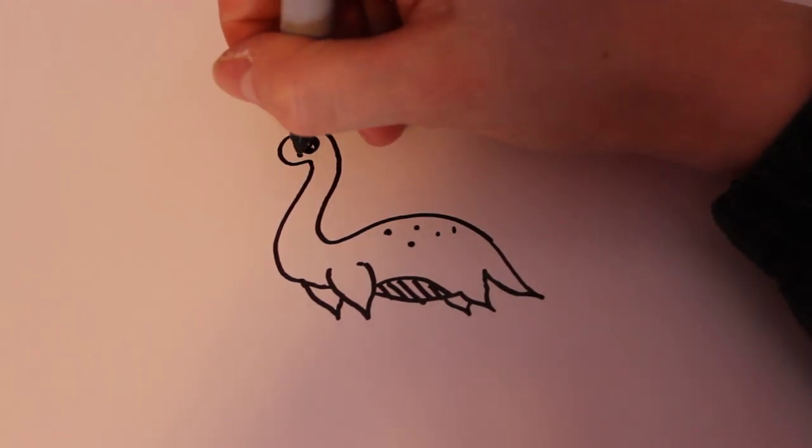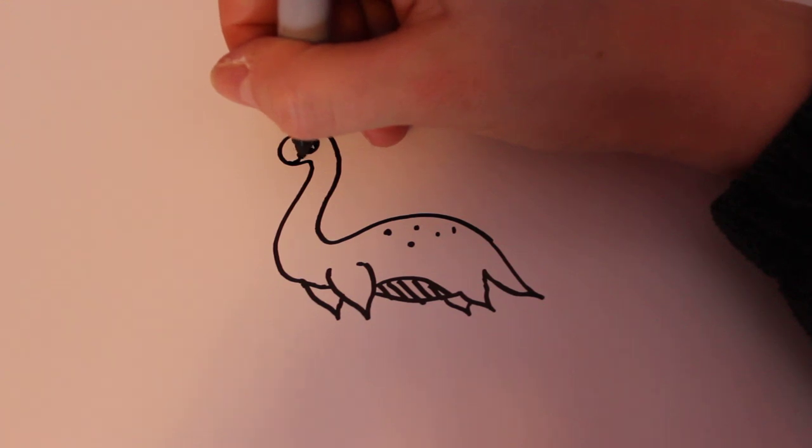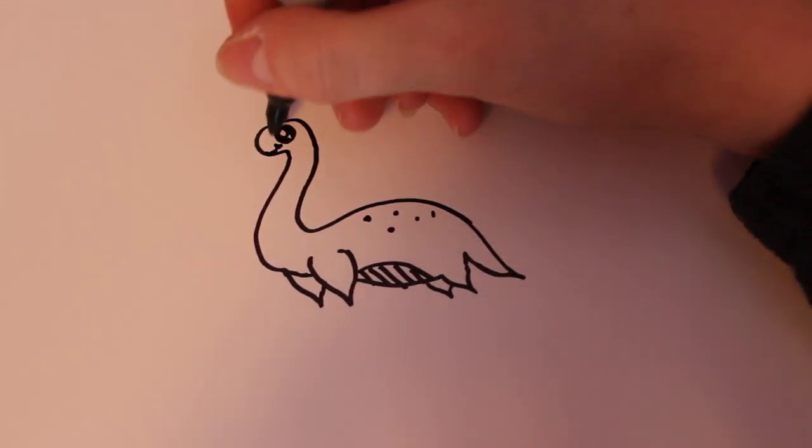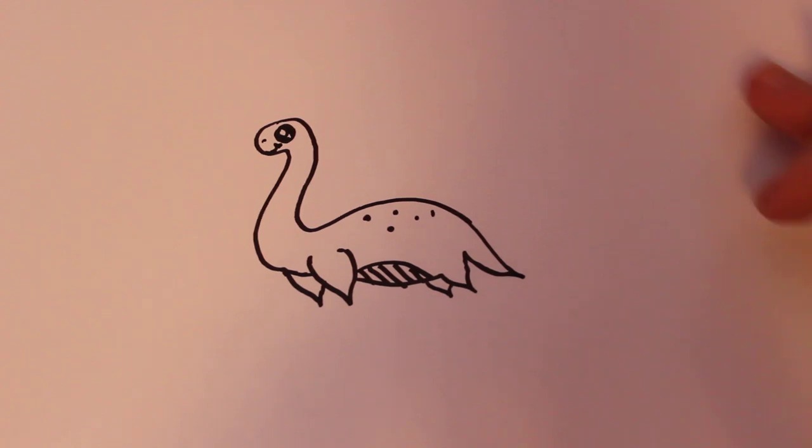And then for the smile, I'm going to go right under the eye there and then draw a little dimple. And then a smile. And then if you want, you can also draw one of the nostrils on the side.